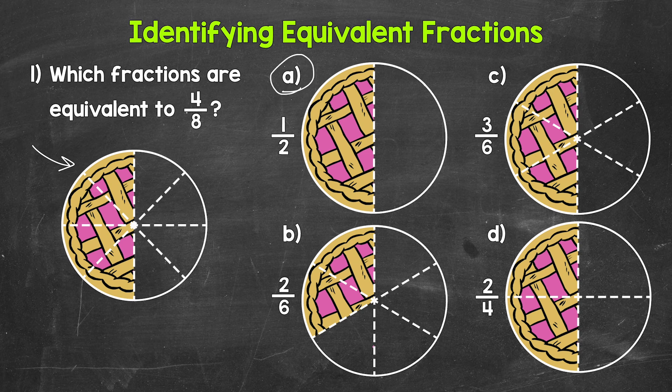Let's move on to choice B, where we have two sixths. Is two sixths equivalent? No, this is less than four eighths. We do not have the same amount here, so this is not equivalent.